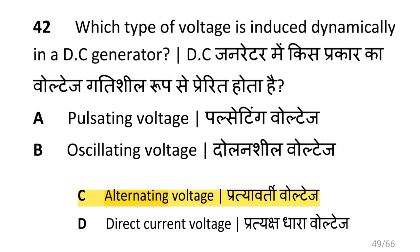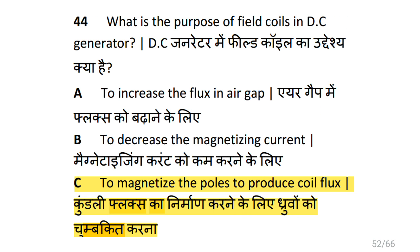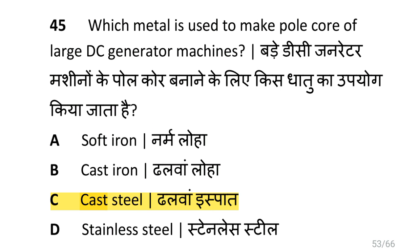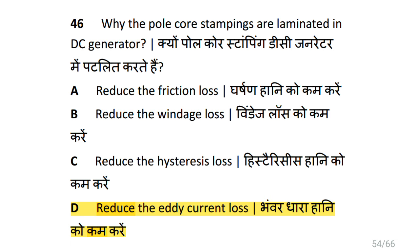Which type of voltage is induced dynamically in a DC generator? That is alternating voltage. What is the purpose of the slot marked as X? That is to fix the key ways. What is the purpose of field coils in DC generator? That is to magnetize the poles to produce flux. Which metal is used to make the pole core of a large DC generator machine? That is cast steel. Why are the pole core stampings laminated in DC generator? That is to reduce eddy current loss.